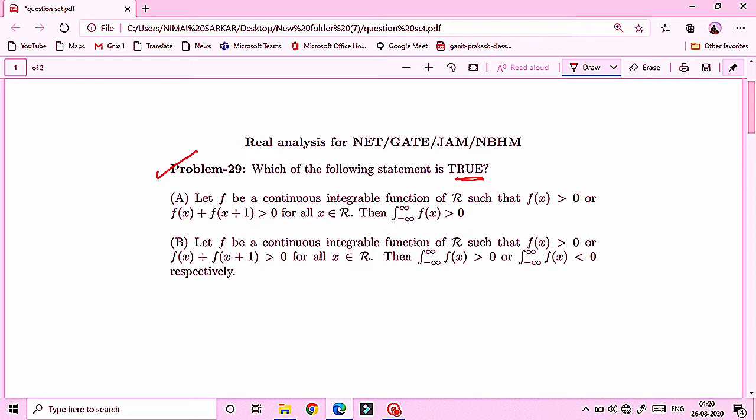First option: Let fx be a continuous integrable function on R such that fx greater than 0 or fx plus f of x plus 1 is greater than 0 for all x belongs to R. Then integration minus infinity to plus infinity fx greater than 0. This one is greater than 0 and second option has this one greater than 0 or this integration minus infinity to plus infinity fx dx is less than 0 respectively.